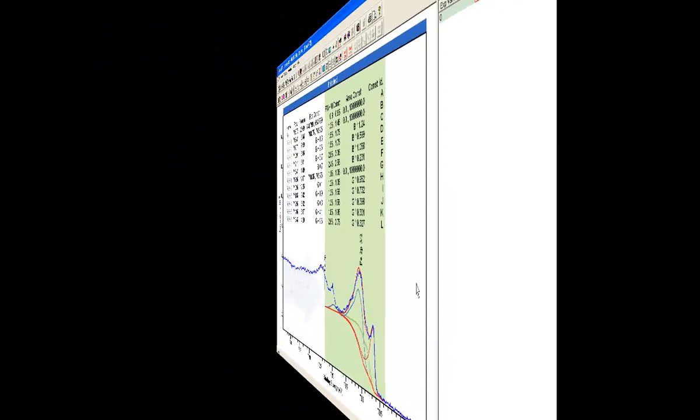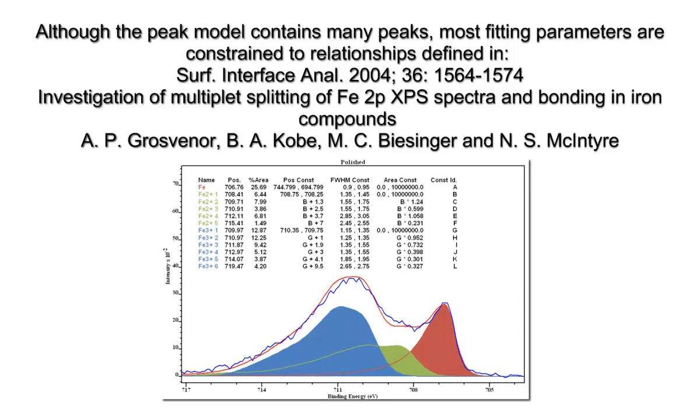So now we can see the three plus and the two plus envelopes clearly as units rather than as separate peaks.